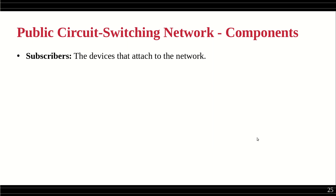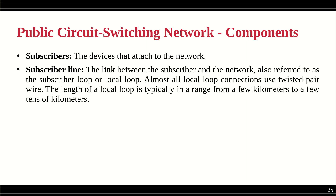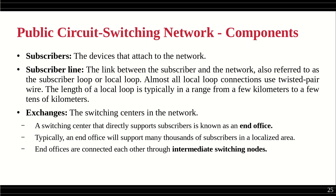Subscribers are the devices attached to the network. The subscriber line, also called the subscriber loop or local loop, is the link between the subscriber and the network. Almost all local loop connections use twisted pair wire because it is a short-distance communication. The length of a local loop is typically in the range from a few kilometers to a few tens of kilometers, which is why twisted pair is sufficient.